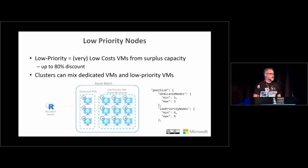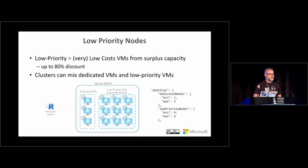You also have the ability to use low priority nodes as cluster components. The most important thing to know is they cost about 80% less than traditional nodes, with a very slight risk they might be taken away if system load gets high. If that happens, doAzureParallel recognizes it as a failed job and reruns it on a different node of the cluster, so you won't notice anything except it takes a little longer. You configure this in the cluster.json file.